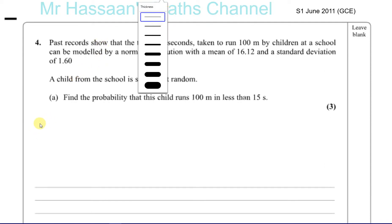So the times taken are such that they are normally distributed with a mean of 16.12 and a standard deviation of 1.60. A child from the school is selected at random, find the probability that this child runs 100 meters in less than 15 seconds.